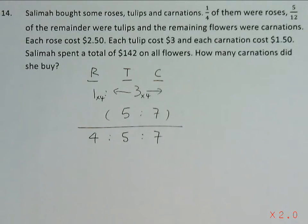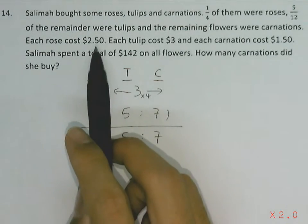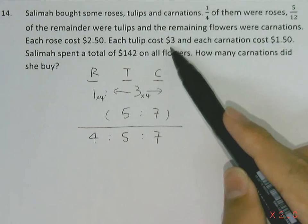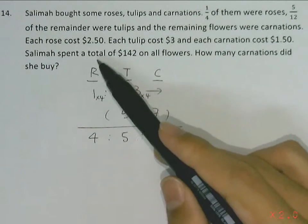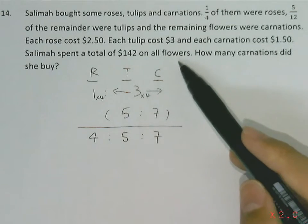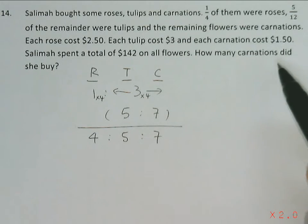Then we know that each rose cost $2.50, each tulip cost $3, and each carnation cost $1.50. Salimah spent a total of $142 on all the flowers. How many carnations did she buy?